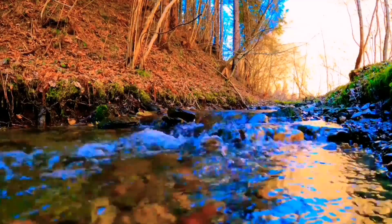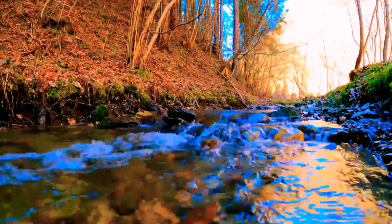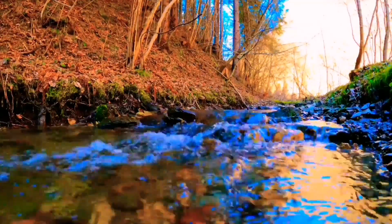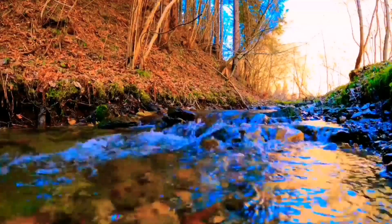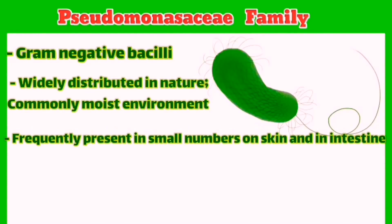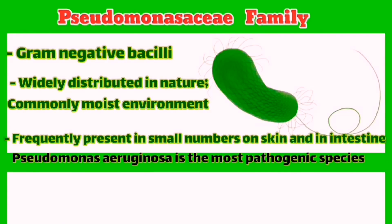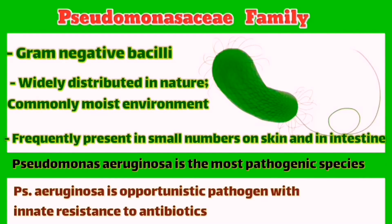Pseudomonas members are gram-negative bacilli and are widely spread in soil, water, on plants and in other generally moist environments. They rarely exist as part of the normal microbiota in humans, but may be present in small amounts on the skin or the gastrointestinal tract. They are considered to be mainly pathogenic organisms to humans where they cause infections.